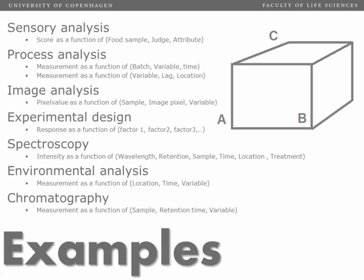Here are just some examples of where we see three-way data. For example, in sensory analysis we would have different food samples, and we would have, say, twenty different persons — assessors — assessing the food samples with respect to a number of attributes, different sensory qualities. Or we could have process data, batch data. So every batch we follow over time for a number of different variables like pressure, flow, temperature, etc. As you can see in this list, there are a number of different areas where we get three-way data.